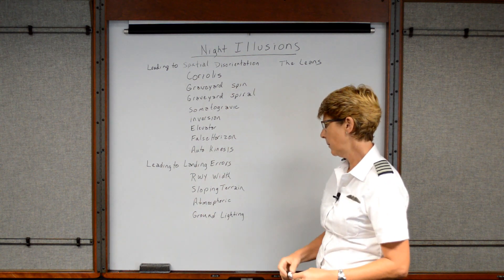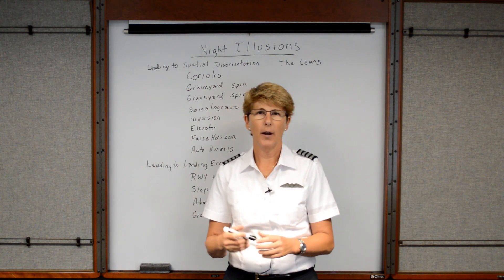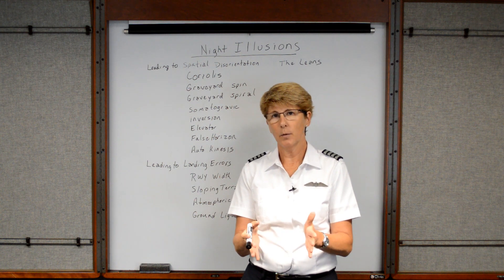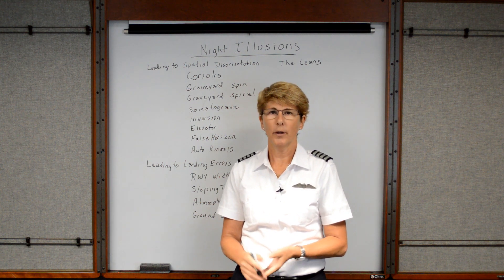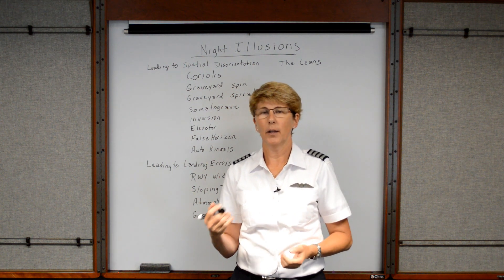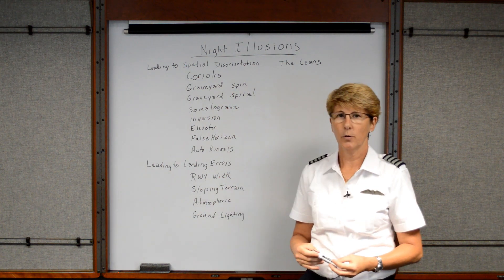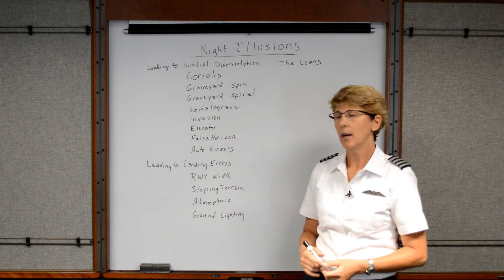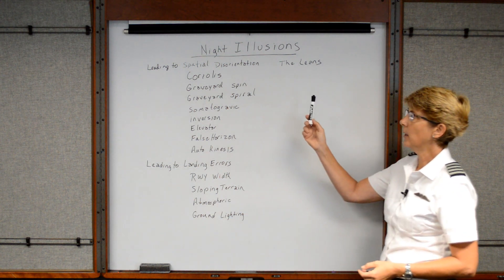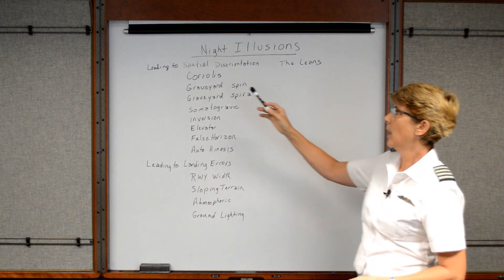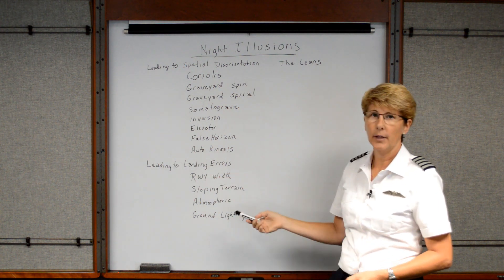Last, we have ground lighting illusions. If you have a very dimly lit runway, you feel like you're farther away than you really are. Or if the runway lights are set to bright, you may feel like you're closer than you really are. Again, trust your VASI-PAPI system and be aware of these illusions so you don't get caught in these traps. These are night illusions you need to be aware of — some may lead to spatial disorientation and some may lead to landing errors.